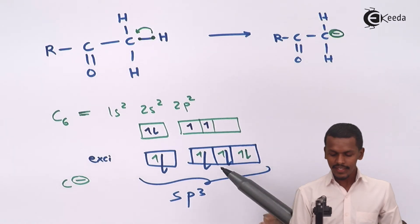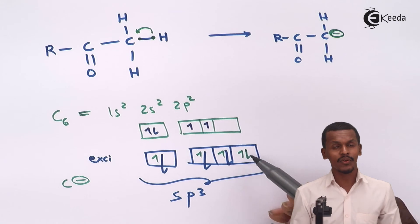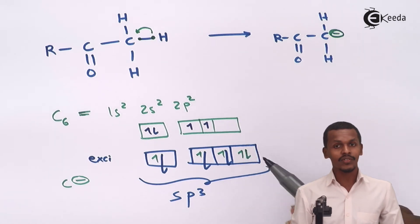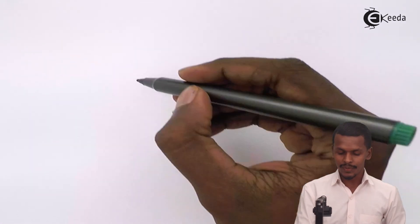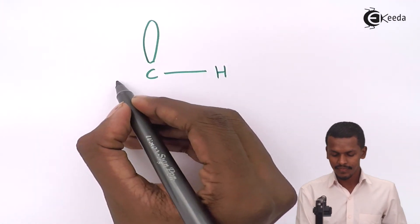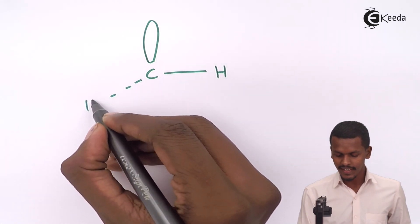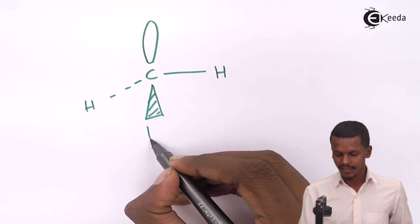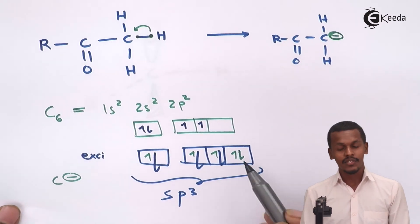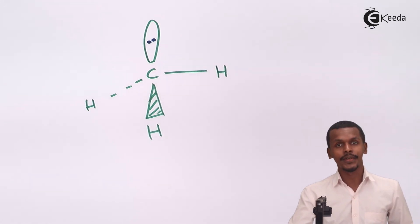The p orbital is filled by two electrons, which is essentially a lone pair of electrons on the carbon. So the geometry of the carbanion is tetrahedral. For example, in methyl carbanion, there are three hydrogen atoms and the lone pair is in the p orbital, giving this tetrahedral geometry.